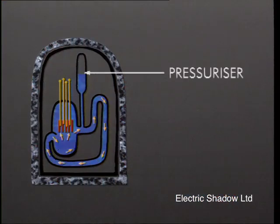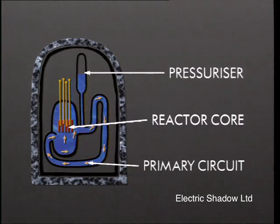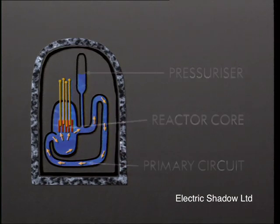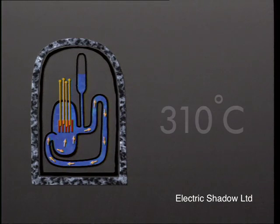Water, pressurized to 155 times normal air pressure, circulates through the reactor core in a totally enclosed circuit called the primary circuit. The core heats the water to temperatures of about 310 degrees Celsius. The pressurizing of the water enables it to be heated to this very high temperature without boiling.